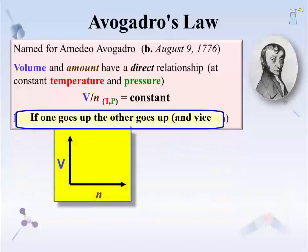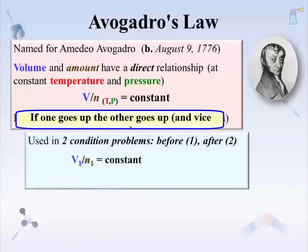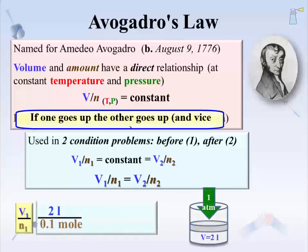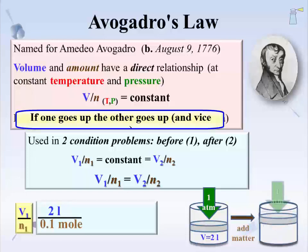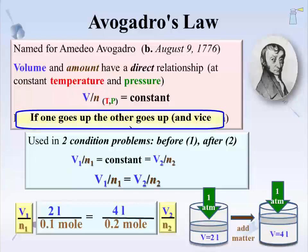Graphically, Avogadro's law says that as amount goes up, so does volume. When considering the law from two conditions — before and after a change — V1 over N1 equals V2 over N2. Setting the two conditions equal to each other gives the four-variable equation used in problem solving and trend prediction. For example, say there is 0.10 moles of gas in a cylinder under a piston with an initial volume of 2 liters. If the amount of gas is increased to 0.2 moles, there must be a matching increase in volume. If the moles are doubled, then so is the volume.